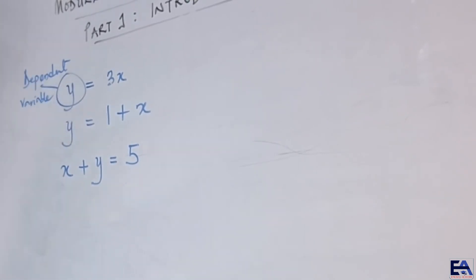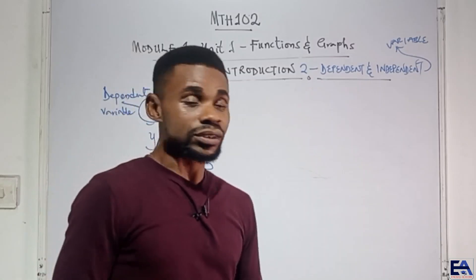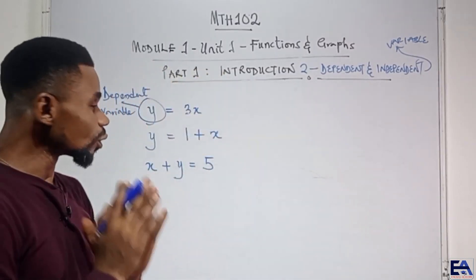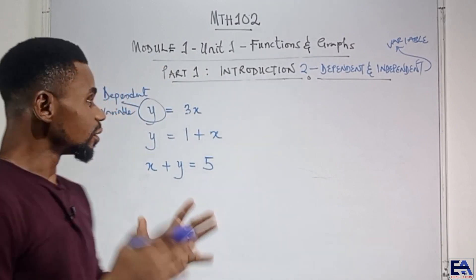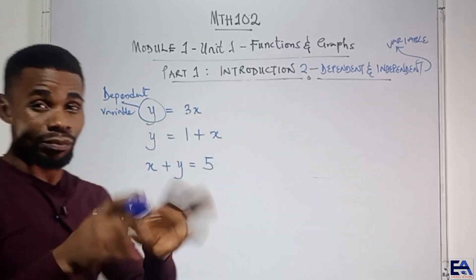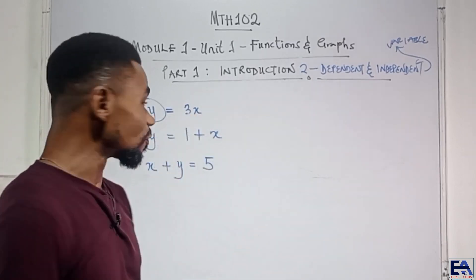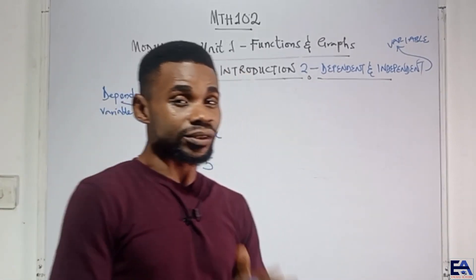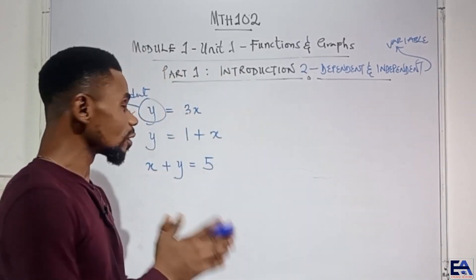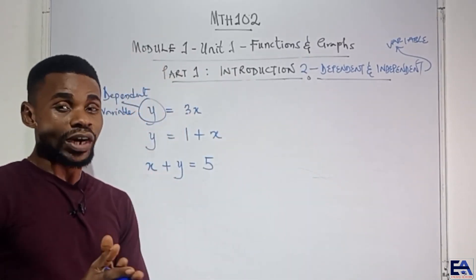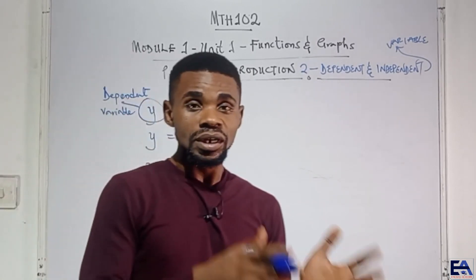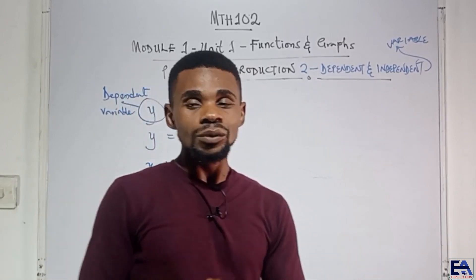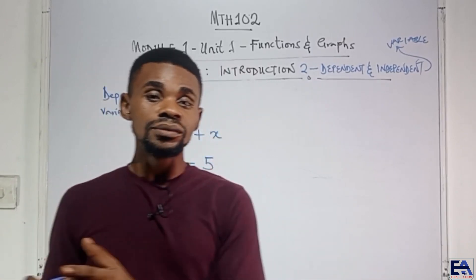In the previous class we learnt about variables and discussed that variables are values that can change. One way to recognize variables is just the presence of letters — alphabetic letters. Whenever you find letters of the alphabet in mathematics or in any calculation, they actually stand for variables. They are unknown values which might just be gotten along the line of the equation or whatever.